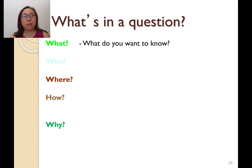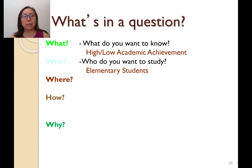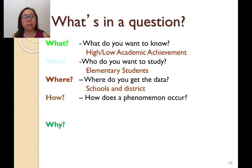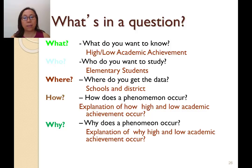In perspective, the basic questions we ask in scientific research are: what, who, where, how, and why. The 'what' question is what do you want to know — perhaps high or low academic achievement. The 'who' question is who do you want to study — for example, elementary students. The 'where' question is where do you get the data — school data and district data. The 'how' and 'why' questions explain how or why a phenomenon like high and low academic achievement occurs.